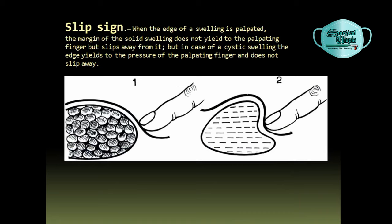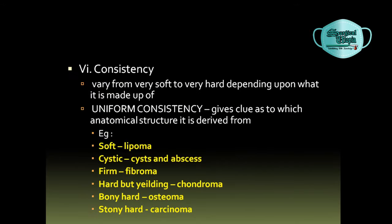The slip sign is demonstrated as follows: in a solid swelling, when the edge is palpated with the tip of the finger, the margin does not yield and slips away. In a cystic swelling, when the edge is palpated, the edge yields to pressure and does not slip away — a slight depression is formed on the edge. The consistency of the swelling should also be assessed, as it can vary from very soft to very hard depending on the type of swelling, and uniform consistency gives a clue as to which anatomical structure the swelling is derived from.